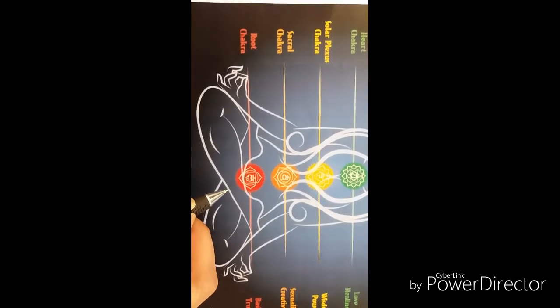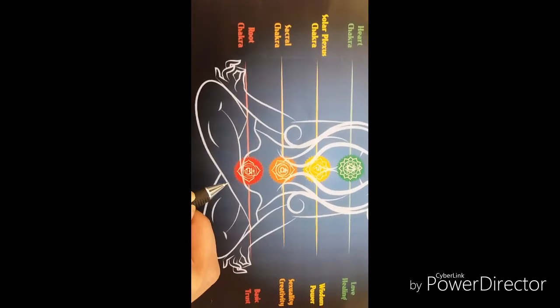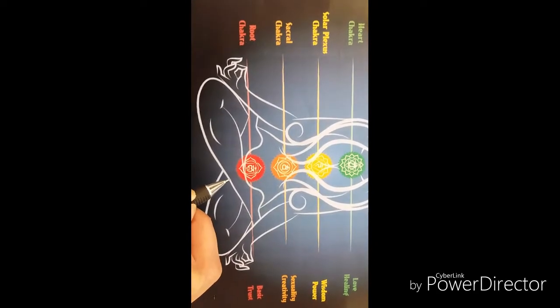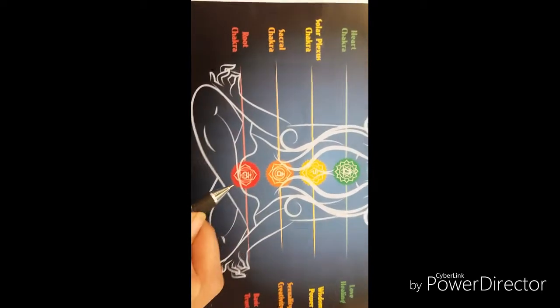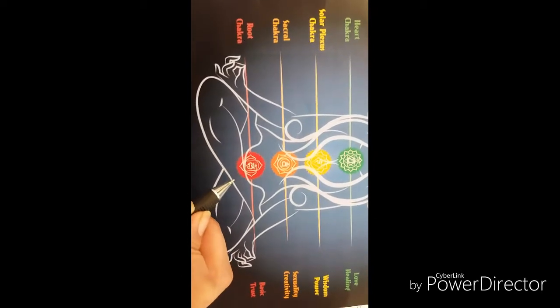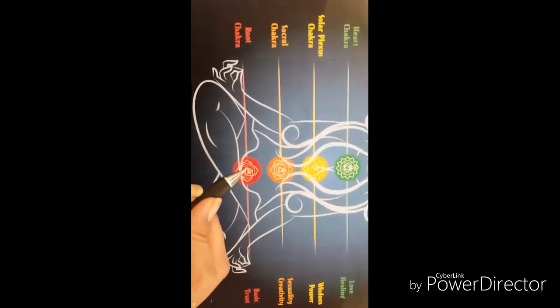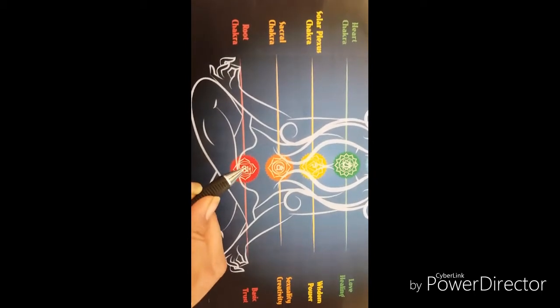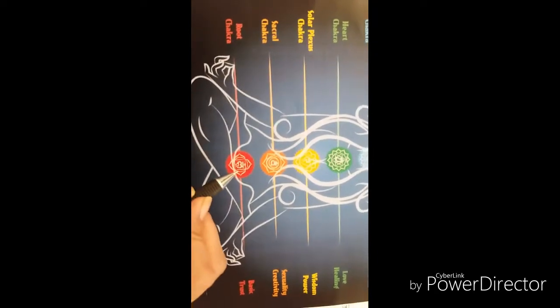Emotional issues related to it are survival issues such as financial independence, money, and food. Physical associations are spine, rectum, legs, arms, circulatory system. If you have any disease related to these particular organs, then you need to focus your energy or do this Muladhara chakra meditation.